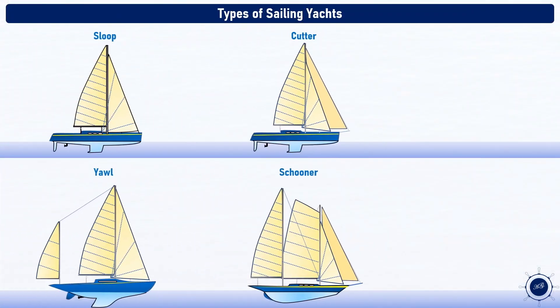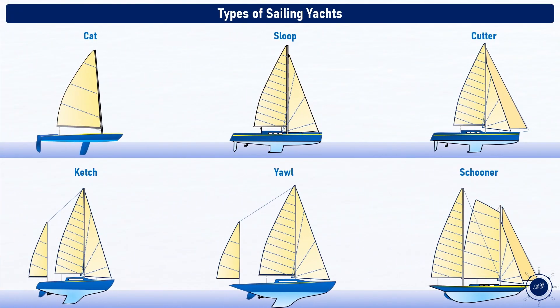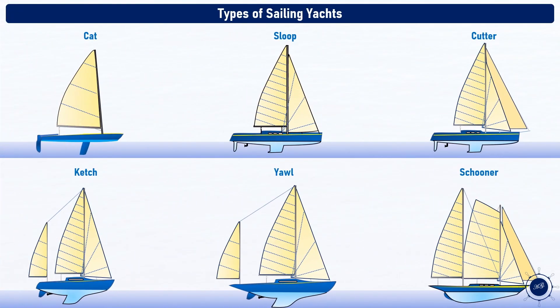Here are the common types of sail yachts: a catboat, sloop, cutter, ketch, yawl, and schooner.